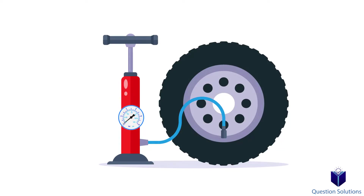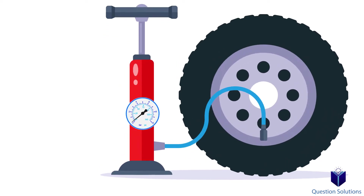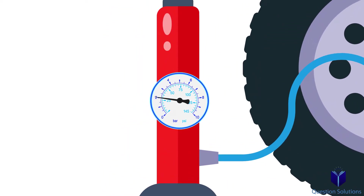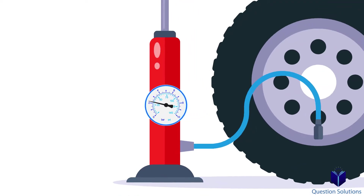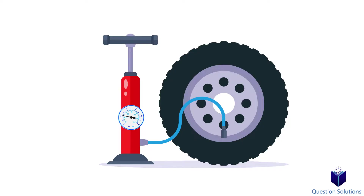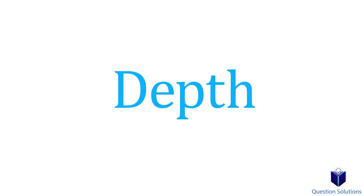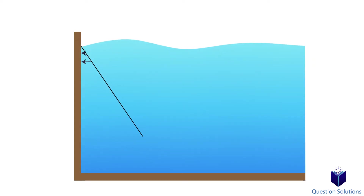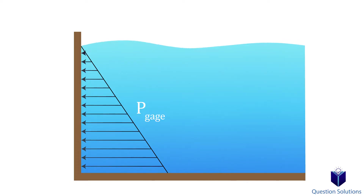To understand this better, imagine you have a tire. You plug your pressure gauge in to see tire pressure and it shows 33 psi. What this is showing is that the air pressure is 33 psi above atmospheric pressure. If we wanted to figure out the absolute pressure in the tire, we'd have to add the gauge pressure and the atmospheric pressure together.